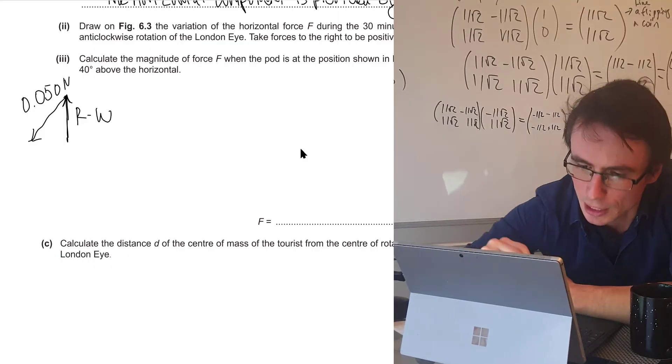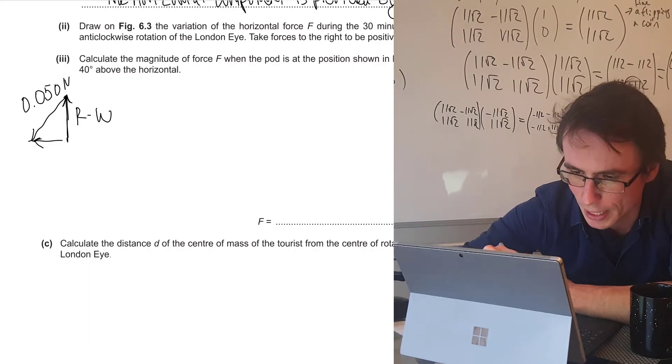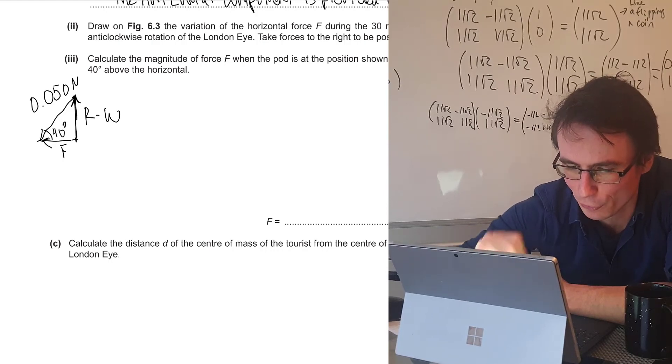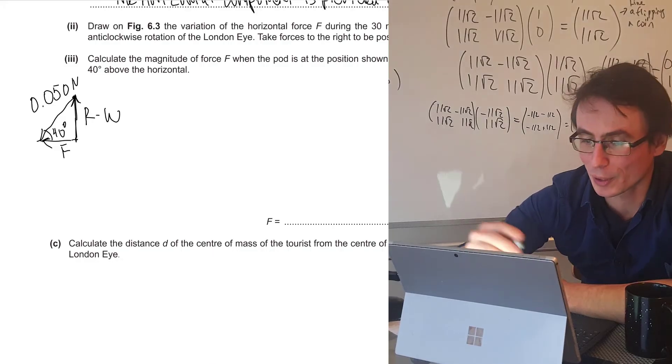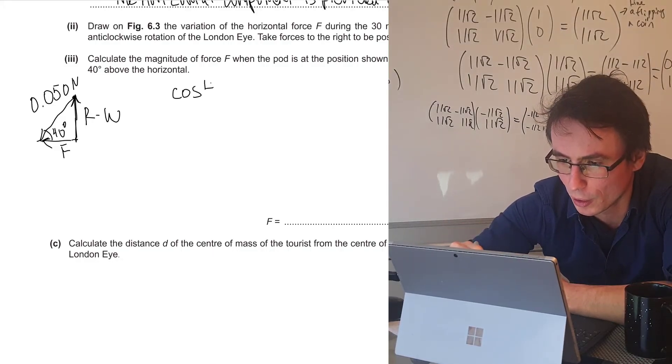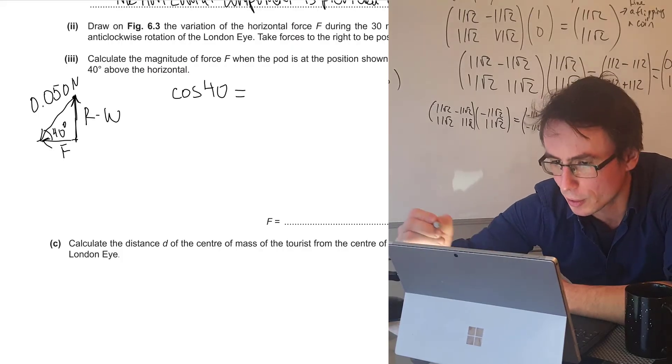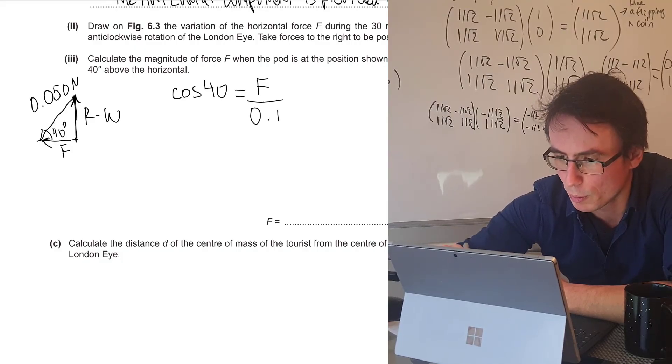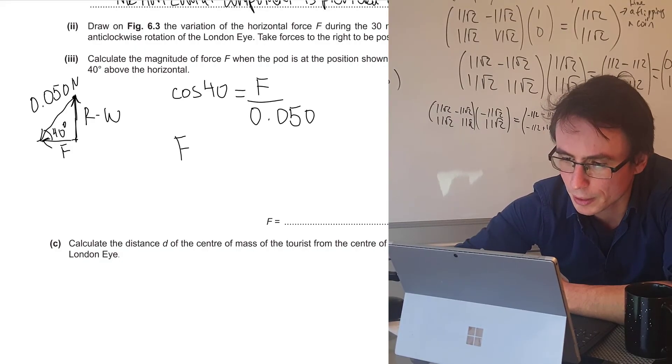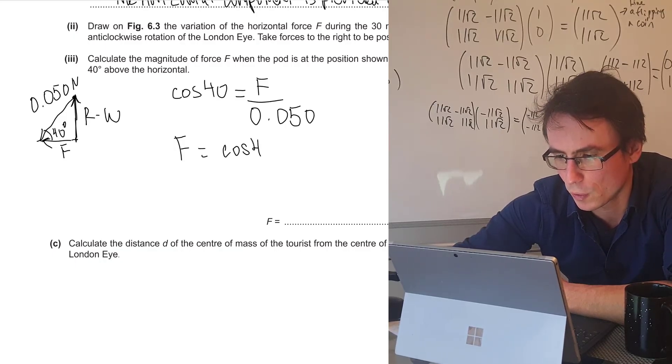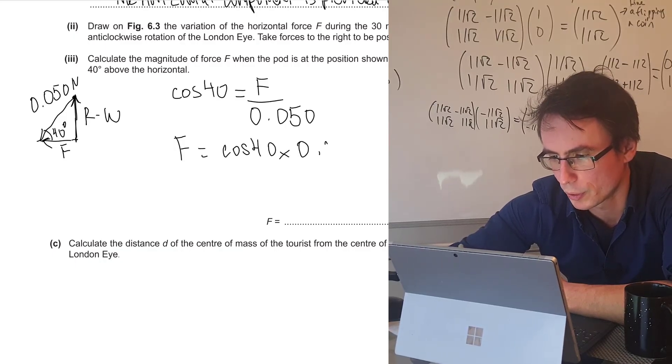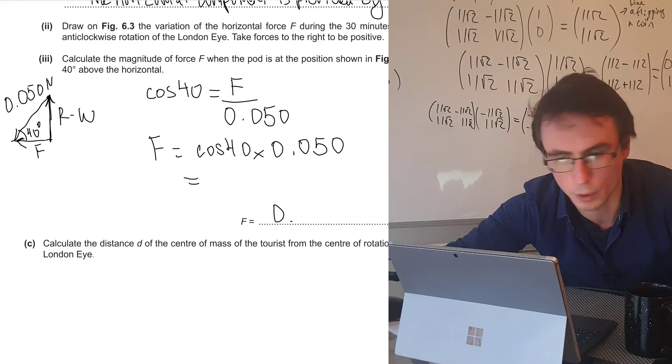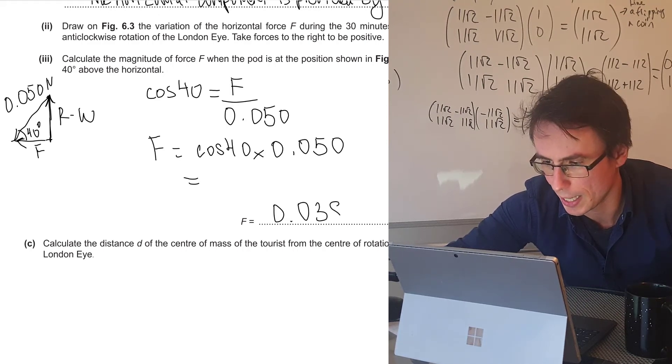And finally, we're going to have the horizontal force which is acting to the left. And at this moment, this angle here is equal to 40 degrees. And we have the force F. Now we're simply going to use SOHCAHTOA. So we know that cosine of 40 degrees is equal to the adjacent, which is the force F that we're looking for, divided by the hypotenuse, which is 0.050, meaning that F is, of course, cos 40 times 0.050. We are going to get around 0.038 newtons.